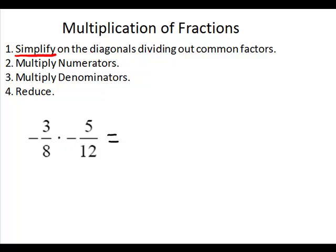My first step helps us to simplify on the diagonals, dividing out common factors. So I check my diagonals. In this direction, for 3 and 12, they have a common factor of 3. So I can divide both of these by 3. 3 will go into 3 one time, and 3 will go into 12 four times.